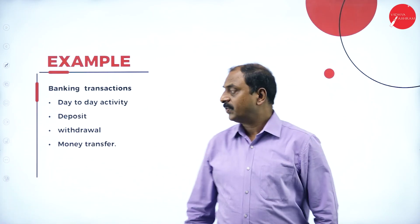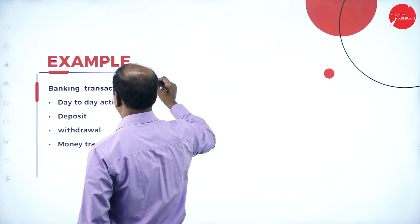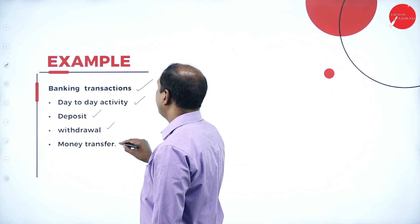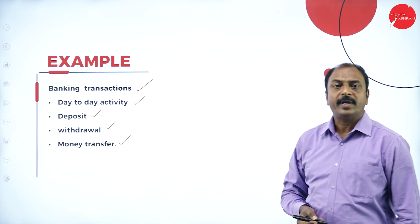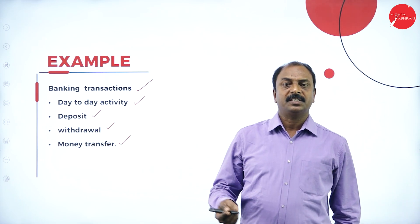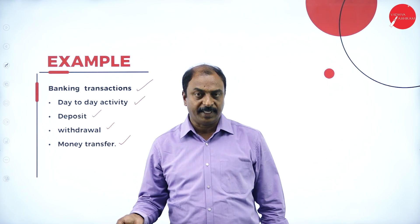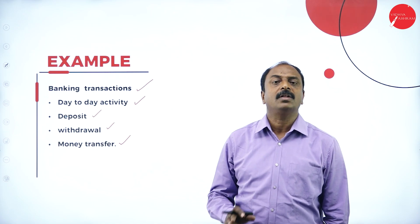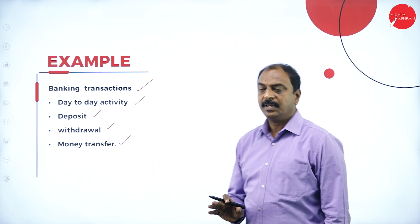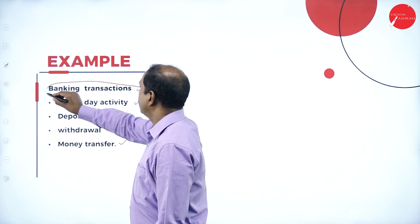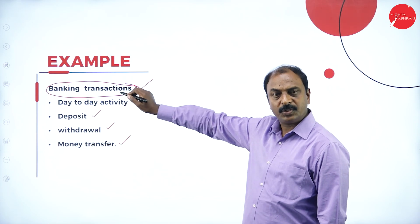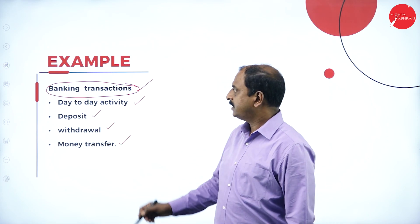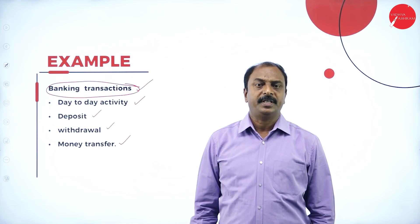Another example of a multi-threading operating system is bank transactions. Day-to-day activities include deposits, withdrawals, and money transfers. Any bank has a number of customers; all customers can be assumed as multiple threads, and the bank branch is the same for all threads. All customers make use of the same database, same software, and same resources for their day-to-day transactions — this is an example of multi-threading.